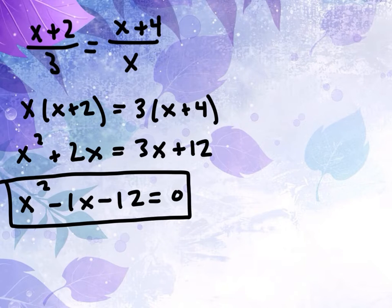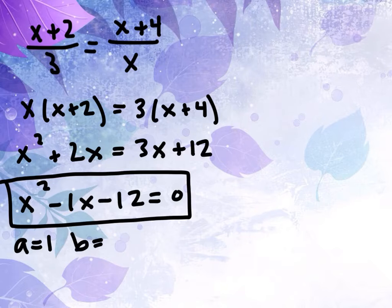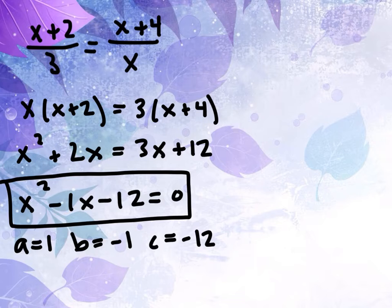This is where we realize we have a trinomial. There are different ways to solve such a thing. You could do the quadratic formula. Certainly would work. This is your a value would be 1. Your b value would be negative 1. Your c value would be negative 12, and you could plug it in.